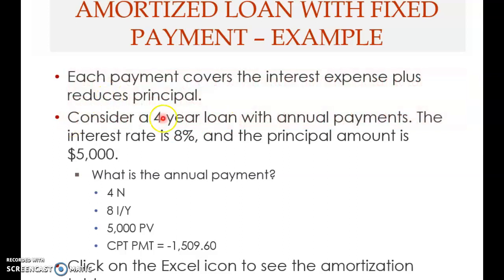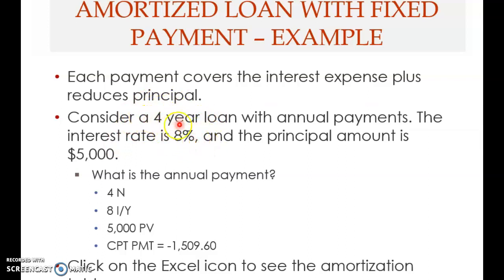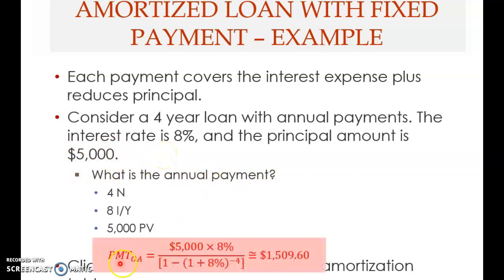Consider a four-year loan with annual payments. The interest rate is eight percent and the principal amount is $5,000. First you need to compute the annual payment — this is a present value of annuity problem where you solve for the unknown payment. Three elements are known: the term (four years), the interest rate (eight percent per year), and the present value of the annuity ($5,000).